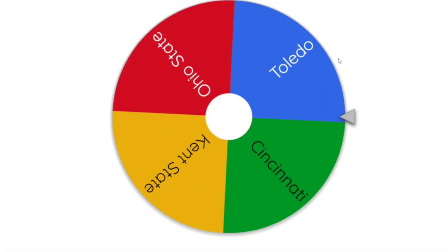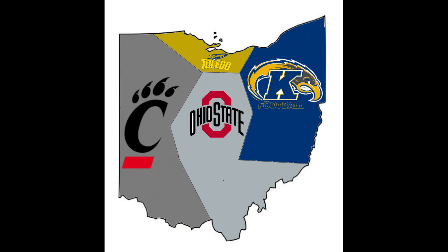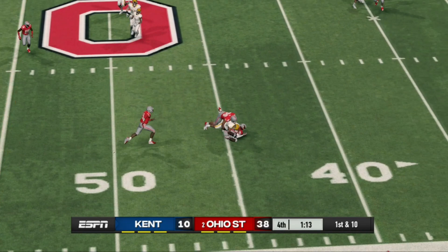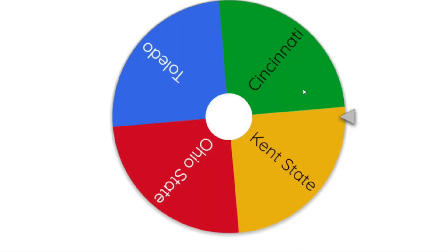Let's see who's going to be next. The wheel slows down — it's Kent State again. They're headed southwest, which is Ohio State once again. And once again, 38 to 10, Ohio State just manages to keep their territory. Can anybody knock off this superpower?